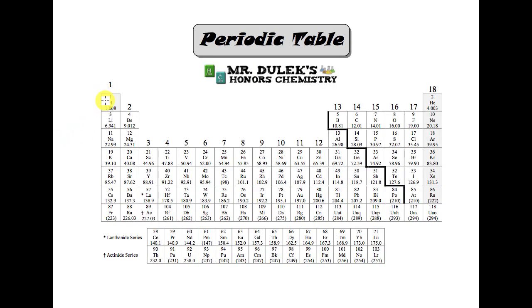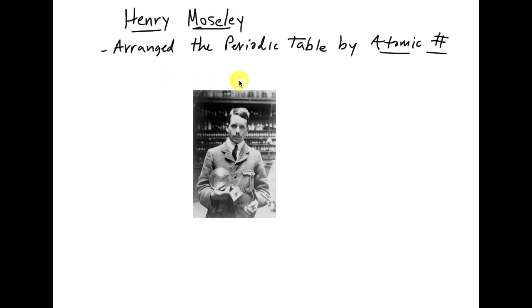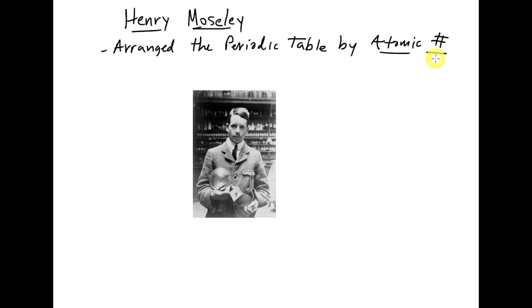Since Mendeleev's table is not completely correct, the more modern table doesn't have elements arranged by atomic mass. The periodic table, as you probably know, is based on atomic number. This was done by an English chemist who realized that Mendeleev's table was good but had some faults — some things that didn't quite match up. The problem was that Mendeleev didn't know about atomic number because the proton hadn't been discovered in 1896. Therefore there was no concept of an atomic number. Henry Moseley came along later in the 1900s and rearranged the periodic table by atomic number.